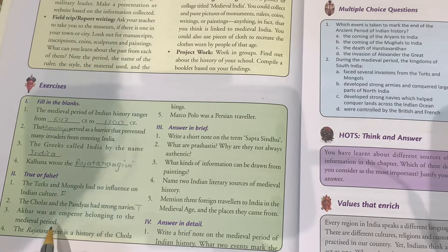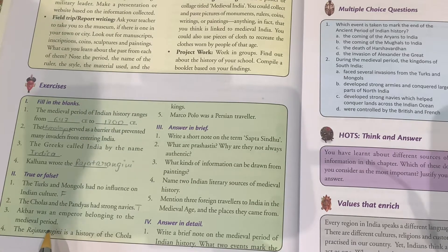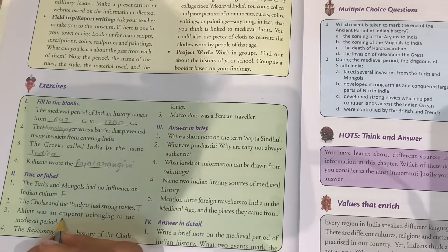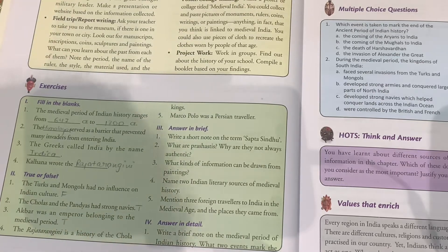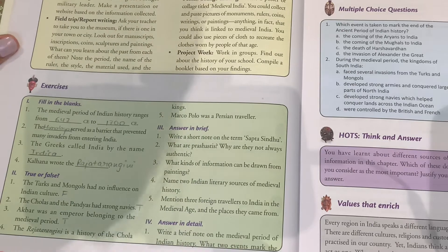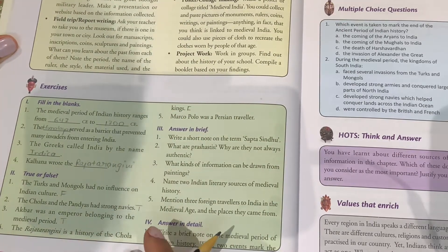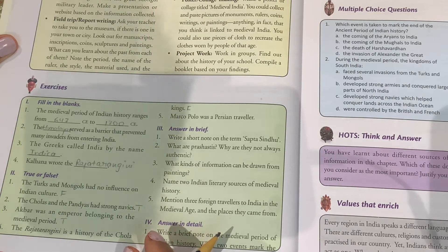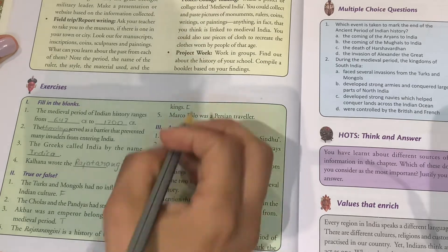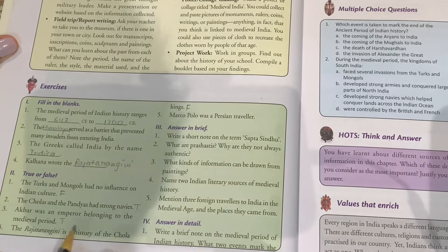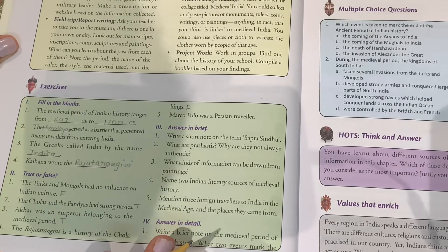Next: Akbar was an emperor belonging to the medieval period — this is true. Akbar was a Mughal emperor who ruled during the medieval period. Next: the Rajatarangini is a history of the Chola king — this is false. The Rajatarangini is a biography written by Kalhana that described the lives and achievements of the kings of Kashmir.